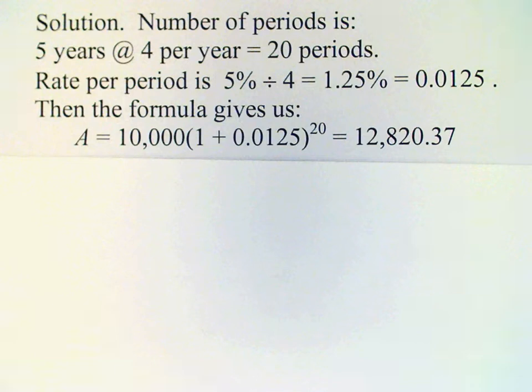Now we can substitute into our formula. 1 plus the rate per period is 1.0125. We raise that to the power equal to the number of periods, which is 20, multiply by the principal, and that gives us our answer: $12,820.37.